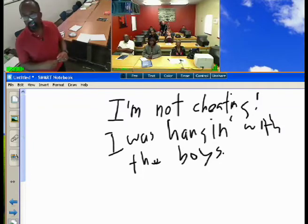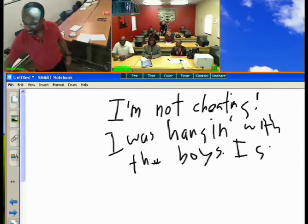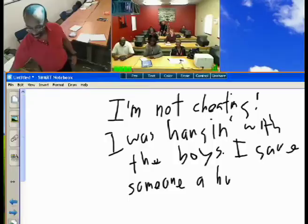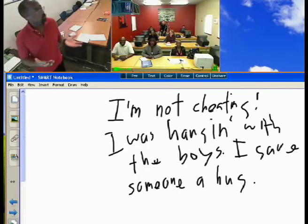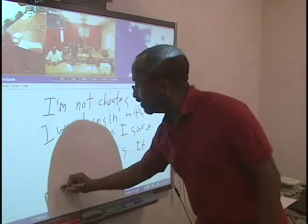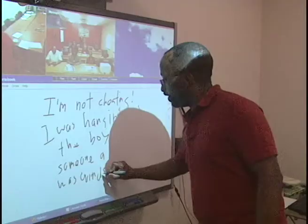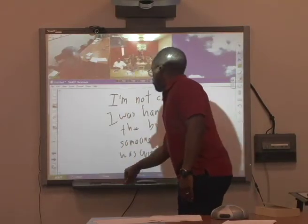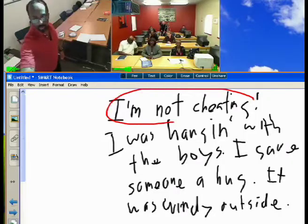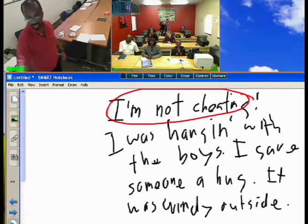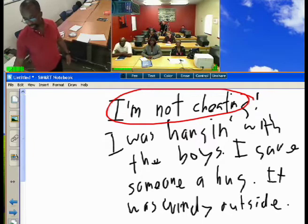Why does he have lipstick on his collar? He gave his mother a hug — he saw his mother. Why is his hair all disheveled, all messed up? It was windy outside. So the topic sentence is 'I'm not cheating,' and the supporting details are: I was hanging with the boys; I gave someone a big hug; and it was windy outside.